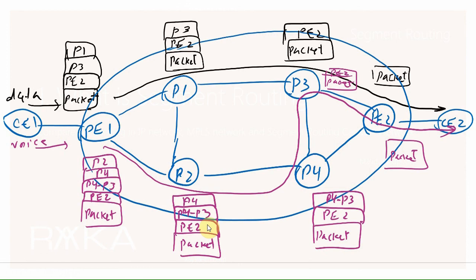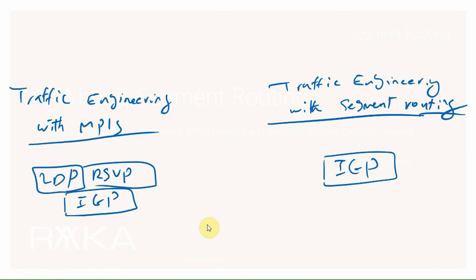With segment routing, like MPLS, we control the paths of different applications according to their quality of service requirements, but at a lower cost. Because routers in the network don't have to maintain the state of every path. In other words, to do traffic engineering in MPLS, in addition to IGP, we need LDP or RSVP for path signaling. But with segment routing, we don't need LDP or RSVP — IGP with some extensions is enough for segment routing.